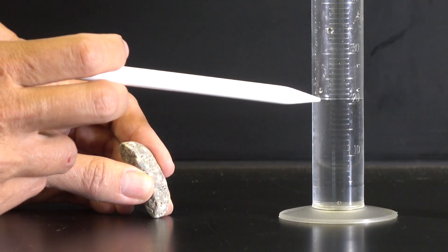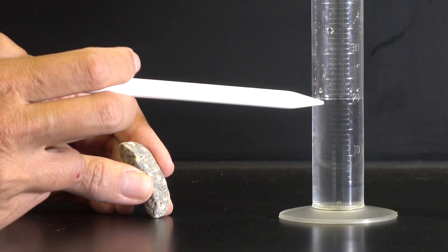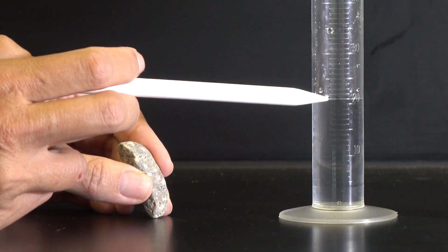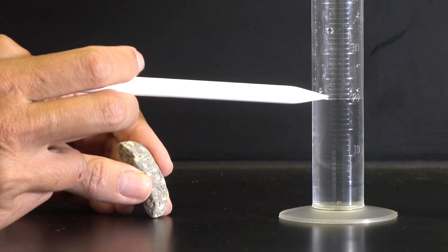Now we read the level on the graduated cylinder. We see that the bottom of our meniscus has passed the 20 milliliter mark but is short of the 21 milliliter mark.